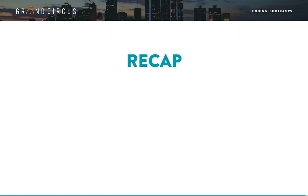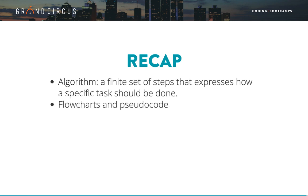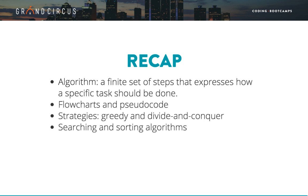That's it for algorithms. We've covered a lot of ground in this series. We defined algorithm as a finite set of steps that expresses how a specific task should be done. We wrote algorithms using flowcharts and pseudocode. We looked at two common algorithm strategies: greedy and divide and conquer. We explored searching and sorting algorithms. And finally, we touched on big O notation for rating algorithm efficiency. You will constantly be writing algorithms in your work. You may find it useful to use flowcharts and pseudocode when thinking through problems and doing code challenges for job interviews. And you may need to evaluate choices between existing algorithms when performance comes into play. You now have the foundation you need.